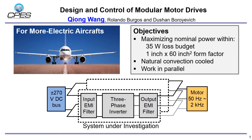This work aims at designing a high-performance modular motor drive that can work in parallel to scale up the system capacity. Furthermore, the nominal power of each converter module should be maximized within the given loss and size limit, and the system should be natural convection cooled.